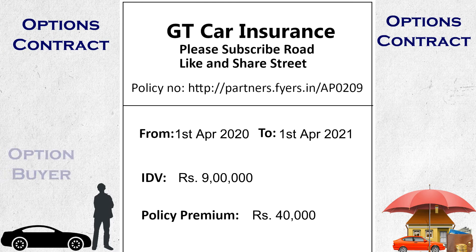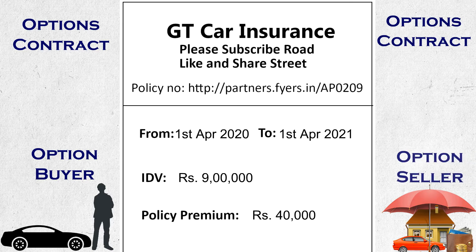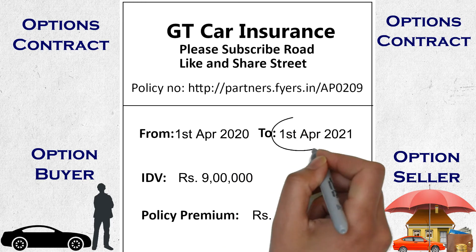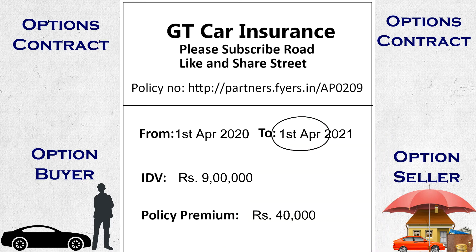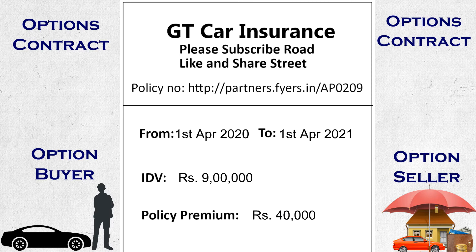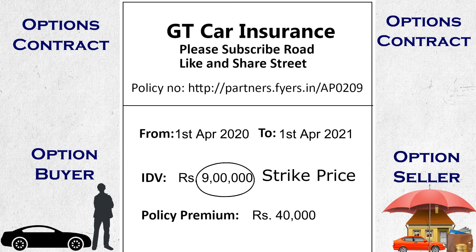In this case, Mr. Sunil is the option buyer — he can also be referred to as option holder. The insurance company is the option seller here and can also be referred to as option writer. The date they fix, that is 1st April 2021, is called the expiry date. The current price of the car — 10 lakhs — is also called the spot price. And they have valued the car for 9 lakhs during expiry — this is called the strike price.